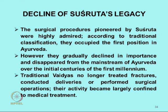The decline of surgery in Ayurveda is a subject of great importance. All these procedures pioneered by Sushruta were highly admired, surgeons were respected, and Shalya was given the first place in all branches of Ayurveda — all this was true in his time. But surgery started declining in importance and disappeared from the mainstream of Ayurveda in the initial centuries of the present era — by the third or fourth century. By the time the Sushruta Samhita was redacted, the importance had considerably declined, which is why a major operation like rhinoplasty is dismissed in two or three verses.